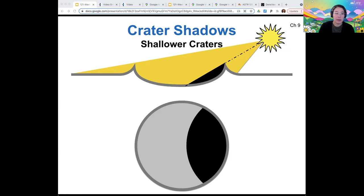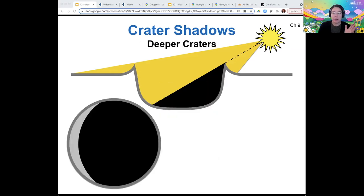Okay, another variable that impacts the shadows is how deep or shallow the crater is. So if the crater is relatively shallow, then the shadow will cover less of the floor, but if the crater is relatively deep, then the shadow will cover more of it. So all of this geometry can be used to figure out the size of a crater and the depth of a crater, if you know the other variable.